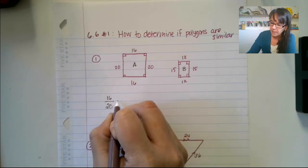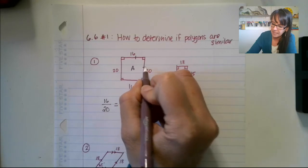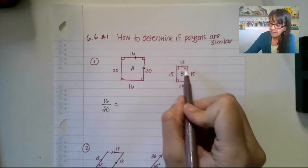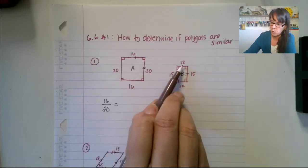Alright, so 16 over 20. That is gonna equal, and notice how we did top and then side, right? We want to do top and then side on the same one. So we're gonna say that equals 12 over 15.